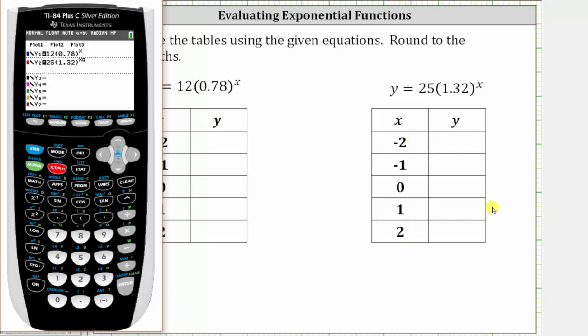To go to the table set, we press second window. The table start is negative two, which is good. The change in the table is by one, which is good. We also need the independent variable to be on automatic, which it is, so that we can scroll up and down the table.